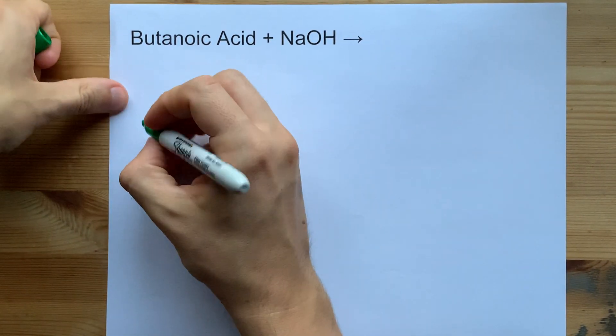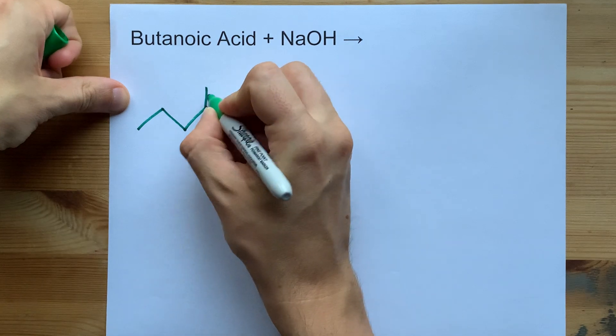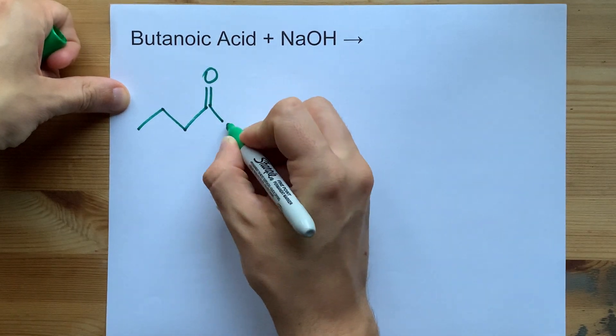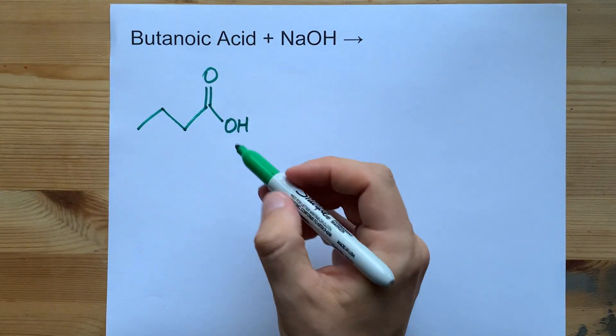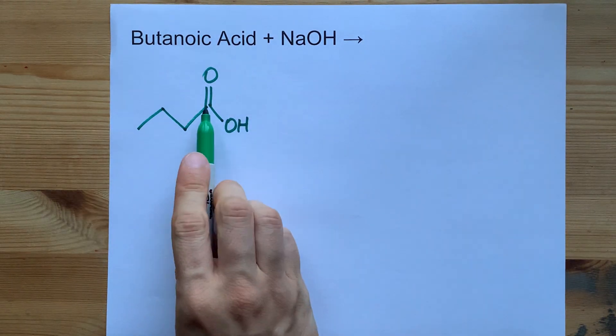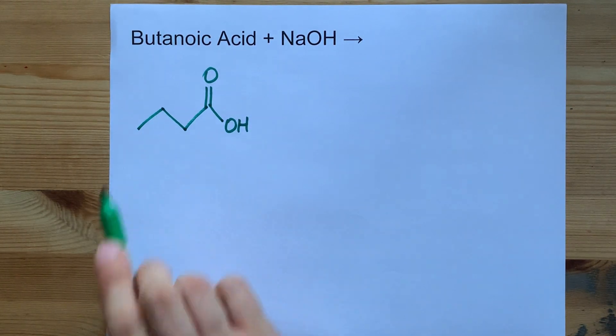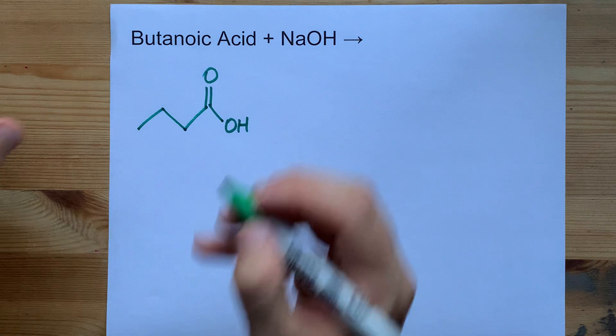Butanoic acid is an acid. I'm going to draw its structure here. If you're familiar with how these skeleton diagrams work, one, two, three, four carbons for the butanoic acid.